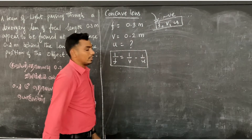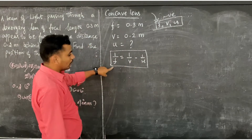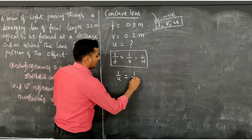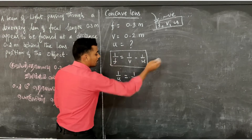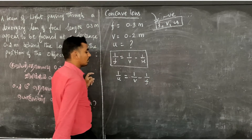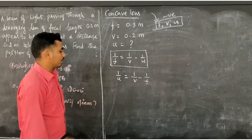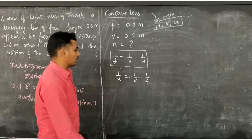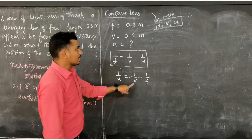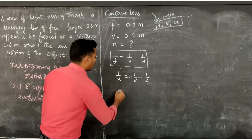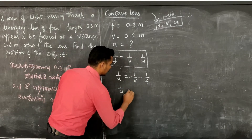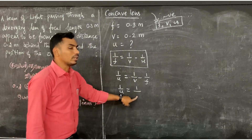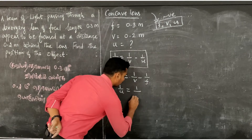In the formula, 1 by U equals 1 by V. In Cartesian sign convention, 1 by F is minus 1 by F. We have U and we will rearrange the formula: 1 by U equals 1 by V of 0.2 minus that of 0.3.